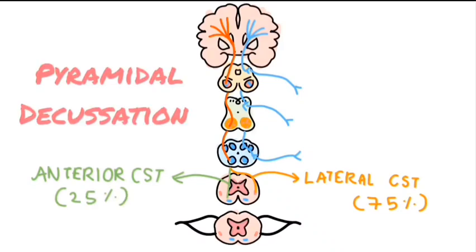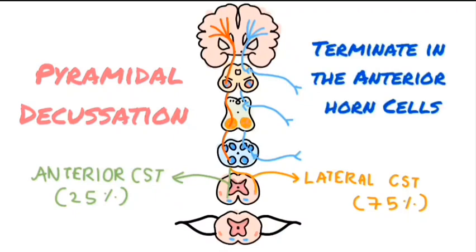The fibers that have decussated form the lateral corticospinal tract, and many of these go through interneurons to terminate in the anterior horn cells, with very few terminating directly. The remaining uncrossed fibers continue down as the anterior or ventral corticospinal tract. However, most axons of the anterior corticospinal tract tend to cross over to the opposite side in the spinal cord just before they synapse with lower motor neurons. They are mainly concerned with bilateral postural movements.